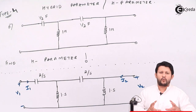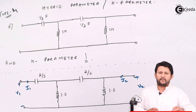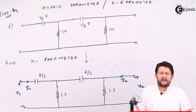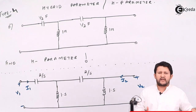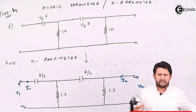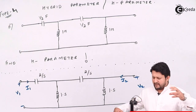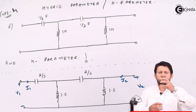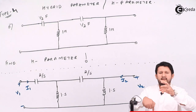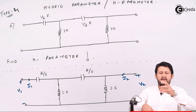You have to take a combination of two — one will be input and one will be output. That's the reason it's called hybrid. You take input voltage and output current, that means V1 and I2. So the equation will be in terms of V1 and I2, and what is left are V2 and I1.